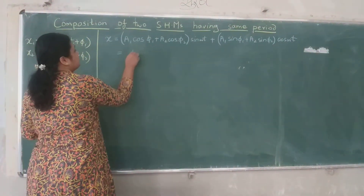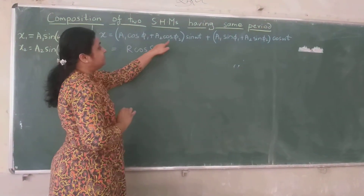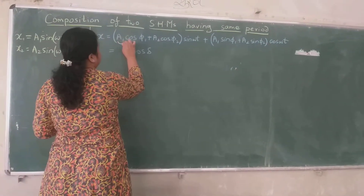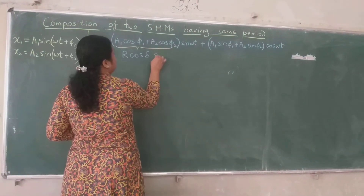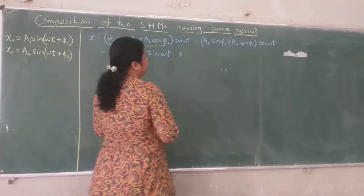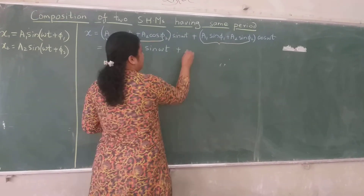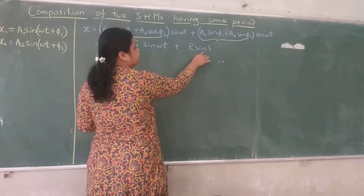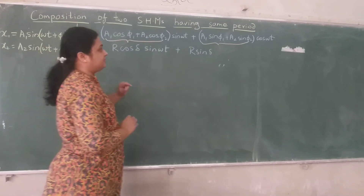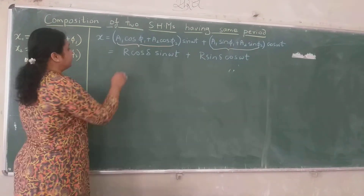Now these bracketed terms are all constants, so we substitute suitable constants for them. Let R cos δ = A₁ cos φ₁ + A₂ cos φ₂, and R sin δ = A₁ sin φ₁ + A₂ sin φ₂. Since the sin terms have R sin δ and the cos terms have R cos δ, the equation becomes X = R cos δ · sin(ωt) + R sin δ · cos(ωt). Can we simplify this further? Yes, we can simplify it further.